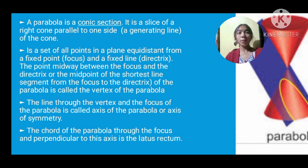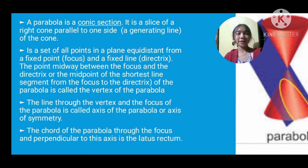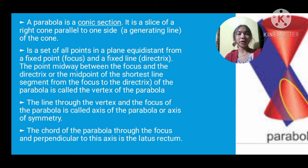A parabola is a set of all points in a plane equidistant from a fixed point, called the focus, and a fixed line called the directrix. The point midway between the focus and the directrix — the midpoint of the shortest line segment from the focus to the directrix — is called the vertex.